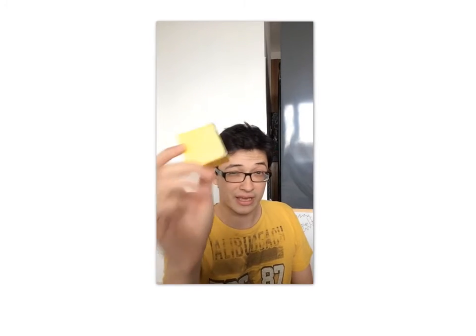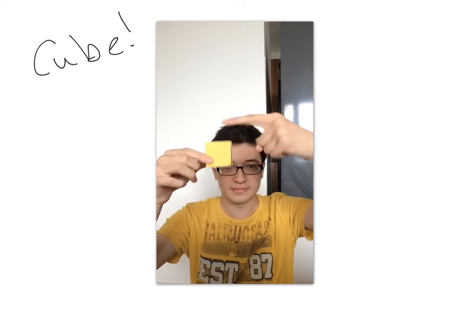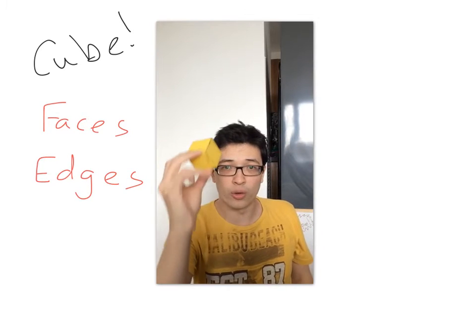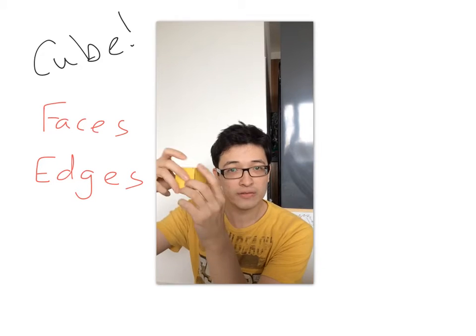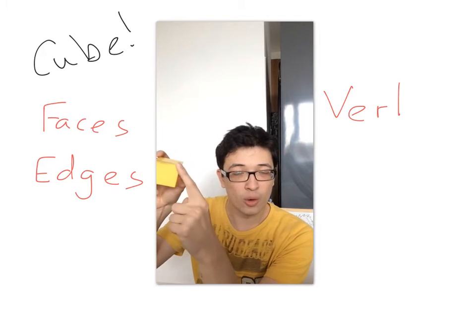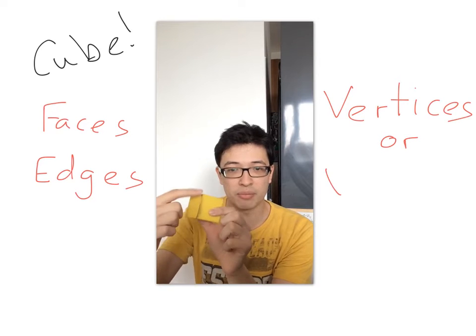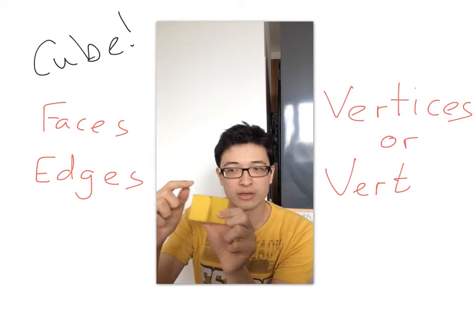This, we should all know, is a cube. And if you remember, we have got faces, we have got edges. As you can see, all those there, edges. And we also have something called vertices, which means where all these edges meet at a point, we have got vertices.